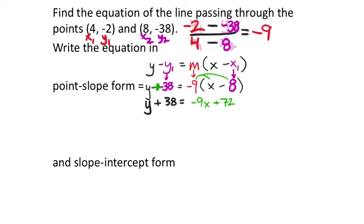Slope-intercept form is y equals mx plus b, where m is the slope and b is the y-intercept. The equation needs to take on this form, where m and b represent specific numbers. We know m is the slope and b is the y-intercept — that's useful for graphing. When we're just trying to write it in this format without any graphs, we have some algebra to go through.